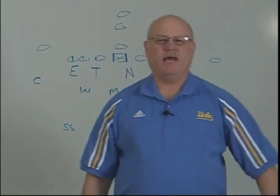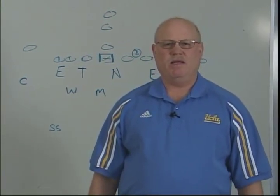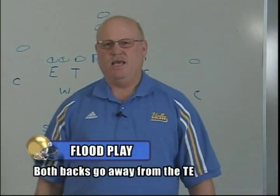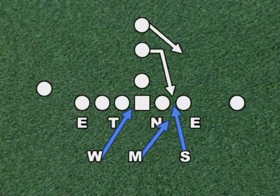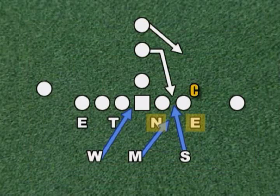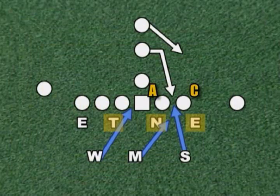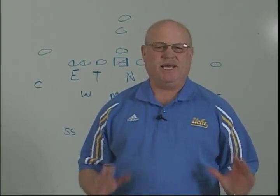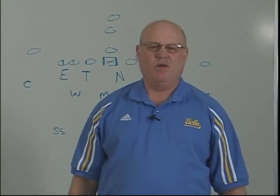The next fit in the 4-3 defense — again seven men involved — is going to be a flood play, both backs away from the tight end. In this lead-weak play, our defensive end on the tight end side will play into the C gap. Our nose again has the A gap, and we ask him to demand the double team and hold that gap as long as possible. Our tackle on the backside is in the B gap and our end is in the C gap. So again, the four gaps are defined by our defensive linemen, and the simplicity of those guys being aggressive and attacking really helps our defense.